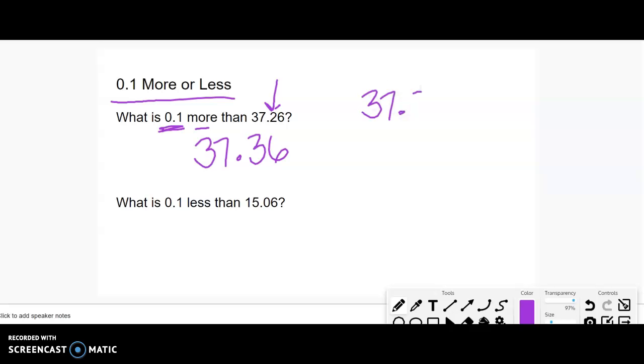I could also write it out because sometimes it's helpful to actually write it down. 37.26 plus 0.10 equals 37.36. Notice either way I got the same thing.